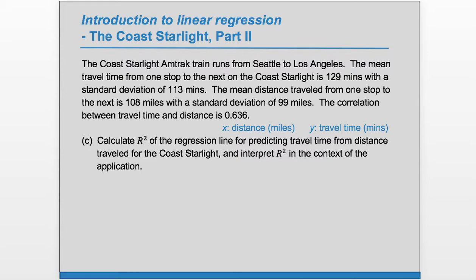Part C: Calculate r-squared, the regression line for predicting travel time from distance traveled for the Coast Starlight, and interpret r-squared in the context of the application. So we're given r, and so to calculate r-squared, we literally just square r. So r-squared is going to be r squared, which is 0.404, so 40.4%.